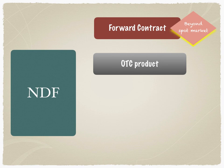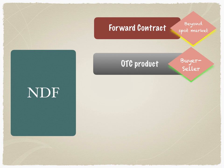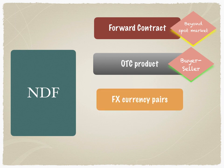NDF is an OTC product — OTC standing for over the counter. Over the counter implies that the product is directly routed between the buyer and the seller with no stock exchange in the middle. Since there is no stock exchange, the contract is customized to meet the requirements of the counterparties. The third characteristic of NDF is that the largest market for NDF is in FX currency pairs that are very illiquid.